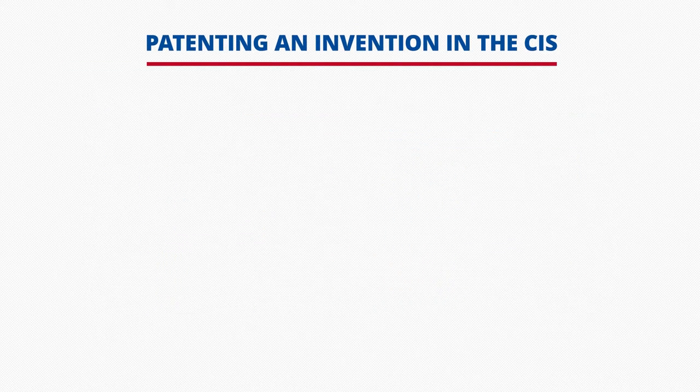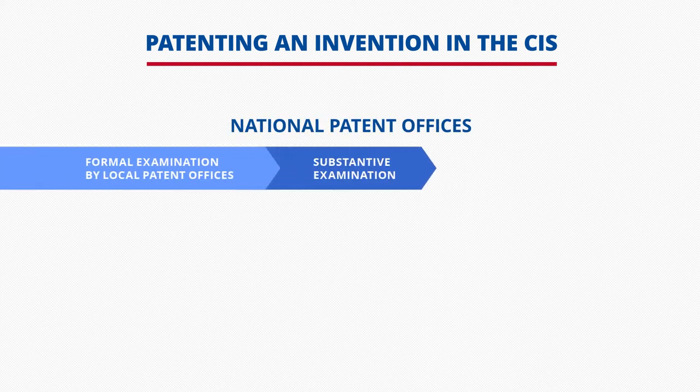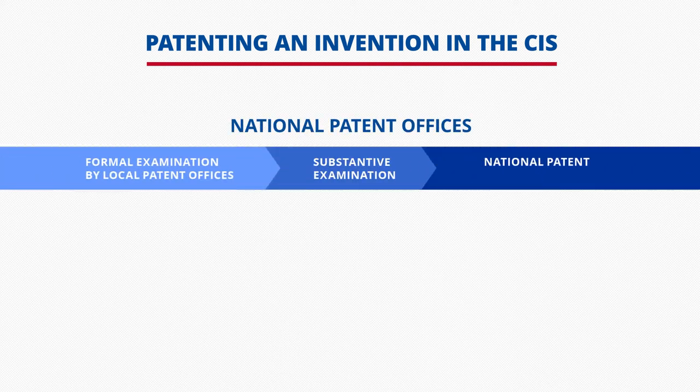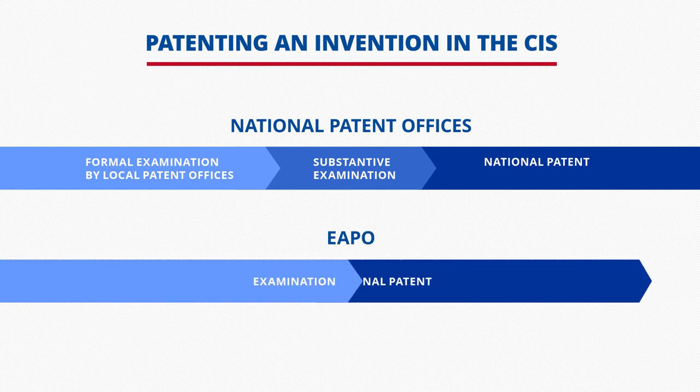There are two procedures to patenting an invention in the CIS. One, through the national offices. Two, through the Eurasian Patent Office.